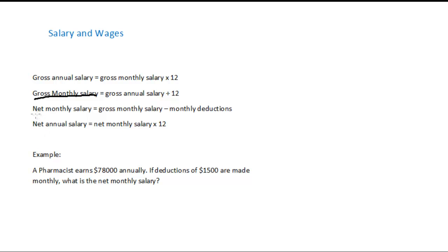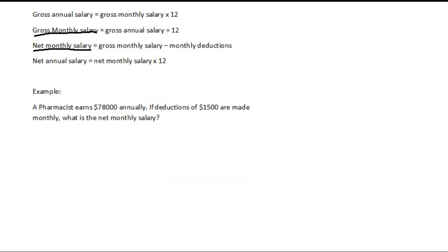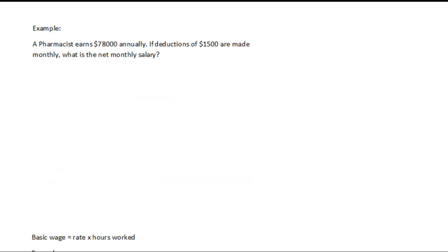The net monthly salary is the amount after all those deductions have been made. So those are two things you need to know: gross monthly salary and net monthly salary. Let's look at an example. A pharmacist earns $78,000 annually. If deductions of $1,500 are made monthly, what is the net monthly salary?